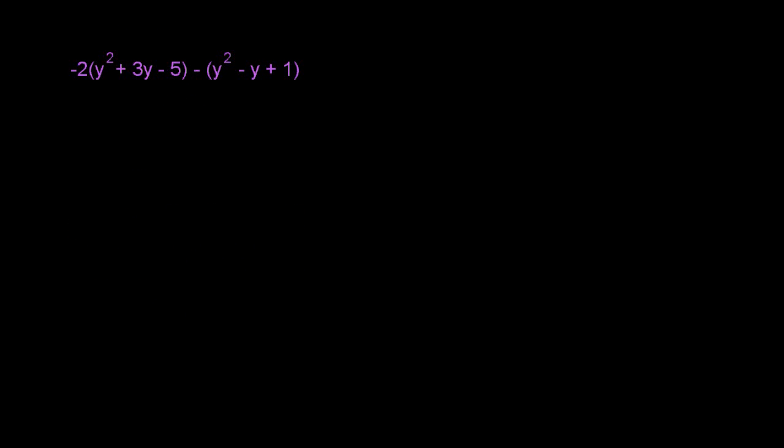Let's look at problem number 2. Same instructions, we're supposed to simplify this and remove the parentheses. It reads negative 2 times this quantity y squared plus 3y minus 5, and then we're going to subtract from that this quantity y squared minus y plus 1. Once again, give it a try. Hit pause, see how you do, and we'll come back and see what your answer is.